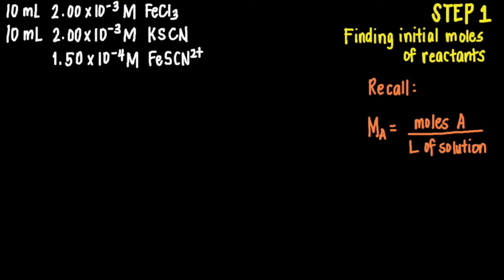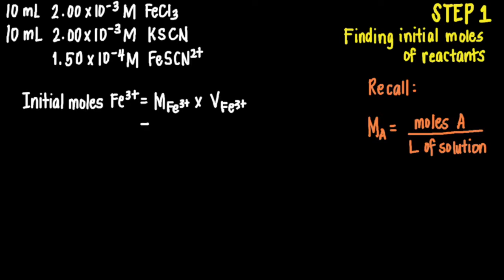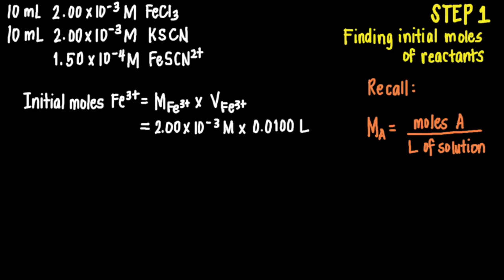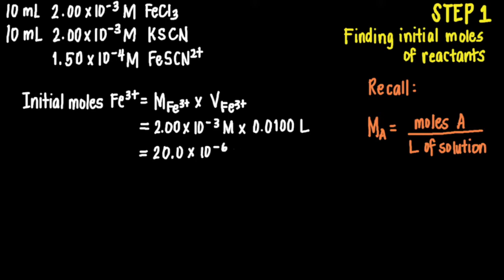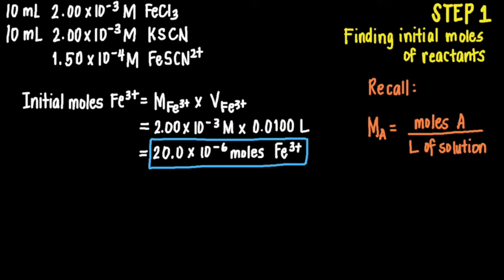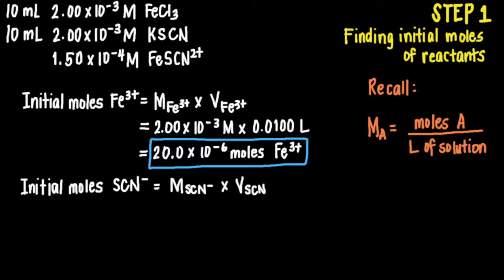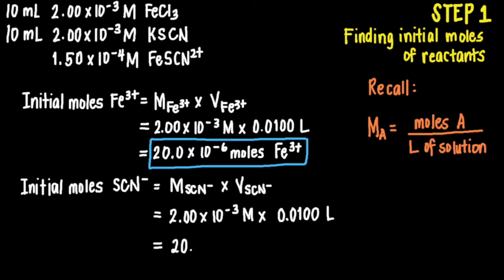Using our equation, the initial moles of iron-3-ion equals its molarity times its volume: 2×10⁻³ molar times 0.0100 liter, which gives us 20×10⁻⁶ moles. Similarly, the initial moles of thiocyanate ion equal 2×10⁻³ molar times 0.0100 liter, giving us 20×10⁻⁶ moles.